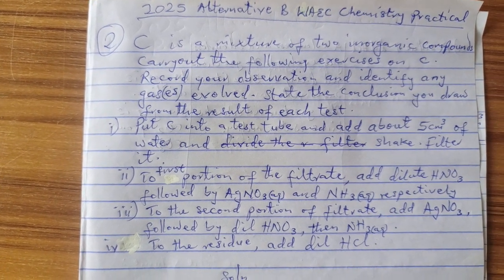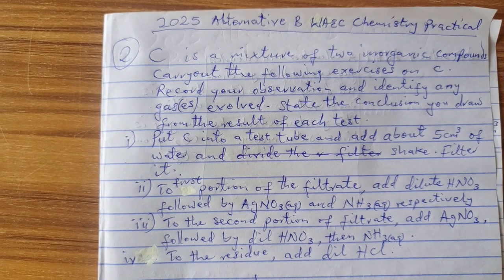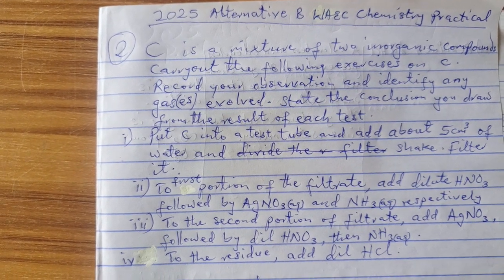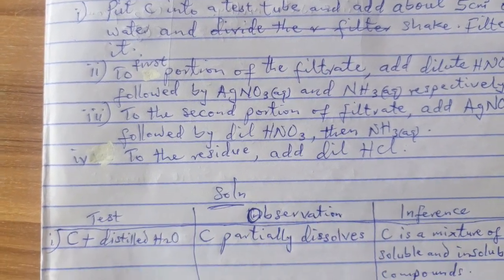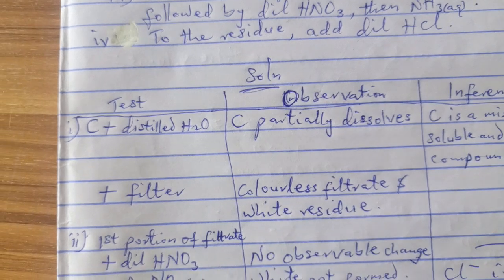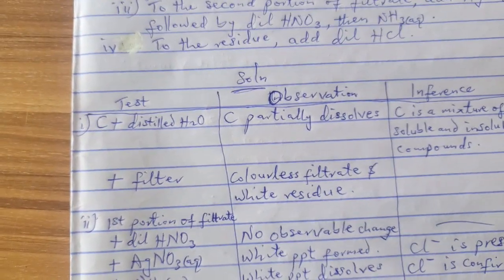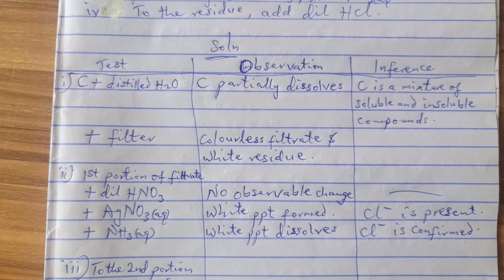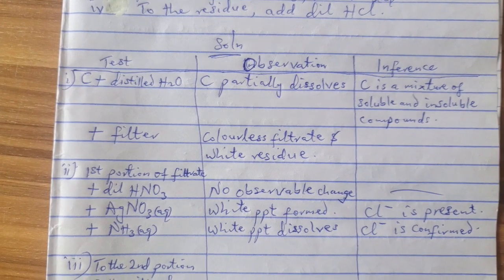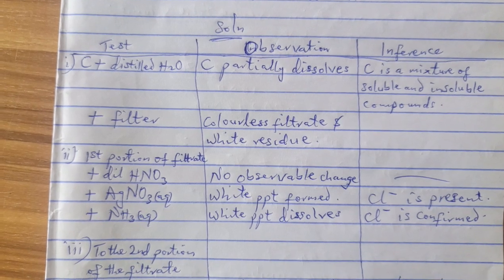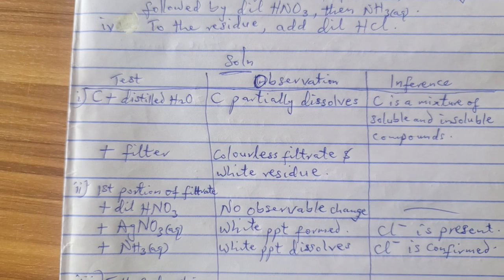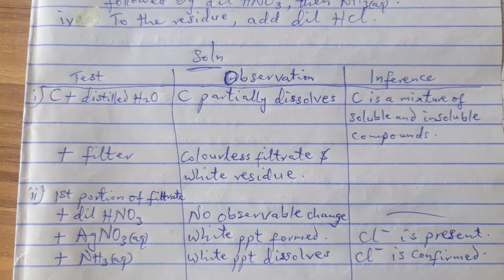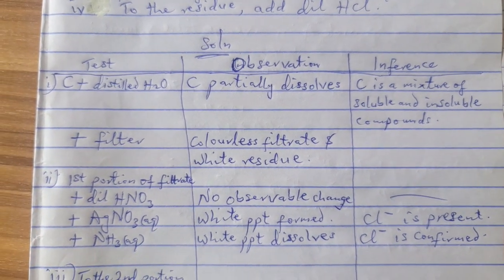Now this is the question that they have given you. So study this question and know what exactly you are expected to do. Follow them exactly the way I am giving you. Now let's go to the solution. The solution now you have to tabulate your table. Quite unfortunate that last year's exam when I was marking I discovered that some students did not use a table. They just wrote their test like notes. So I am advising you to use a table: Test, Observation, and Inference.